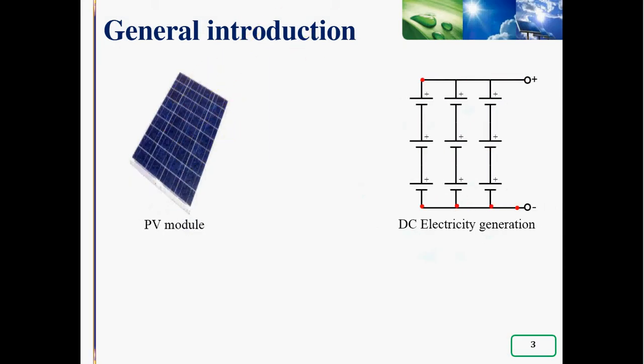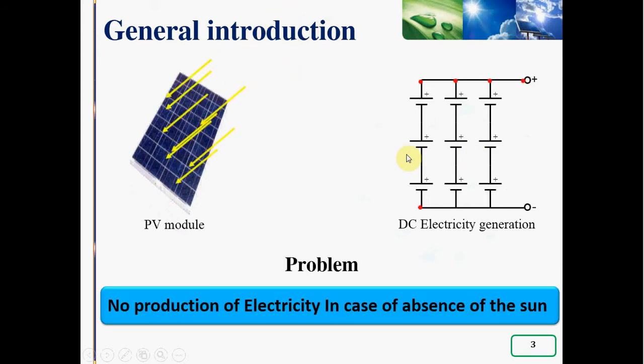Among renewable energy systems, we find solar PV energy, and by means of PV module produce a DC electricity generation. However, in case of absence of the sun, no production is noticed.